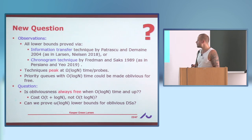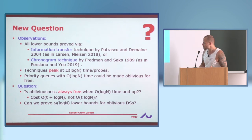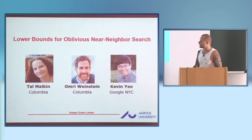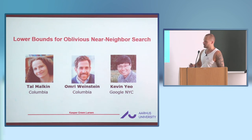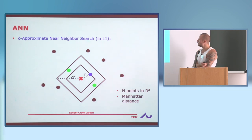We tried to prove that the total number of probes when running an oblivious data structure has to be little-omega(log N) for some problem. This is joint work with Tal, Kevin, and Omri Weinstein from Columbia. The problem we look at is nearest neighbor search.